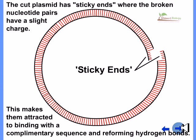The cut plasmid has sticky ends where the broken nucleotide pairs have a slight charge in all directions. This acts like Velcro. This makes them attached to binding with a complementary sequence and reforming the hydrogen bond.